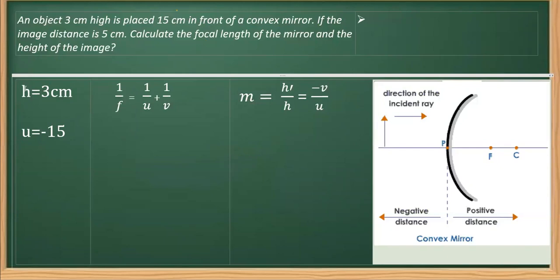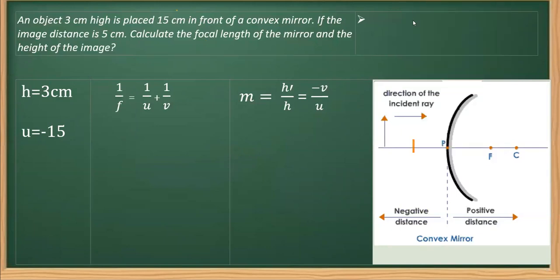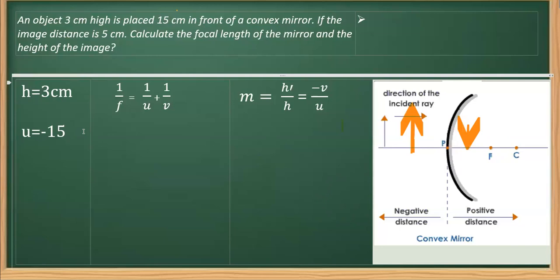The image distance is also given. An important thing to note is that the image formed in a convex mirror is always virtual, always erect, and always smaller in size (diminished), and it is always found between F and P. That is why we take the image distance as positive. So image distance v is positive 5 centimeter.